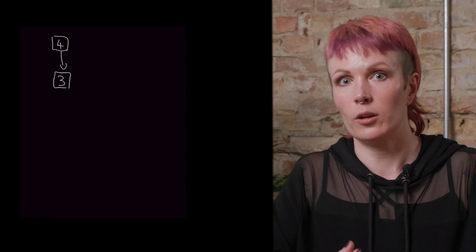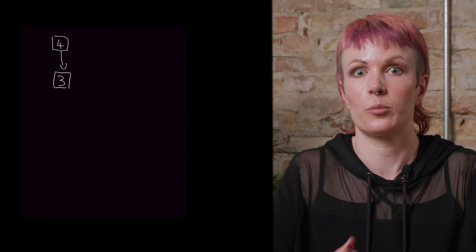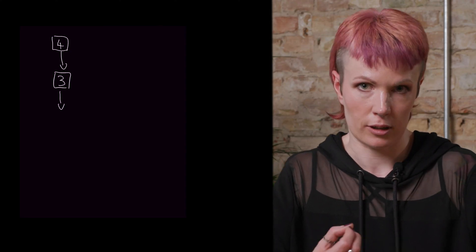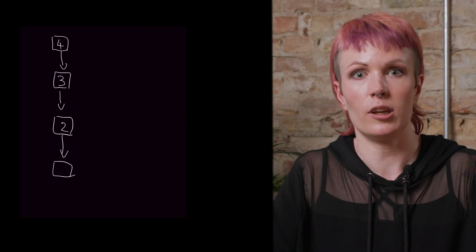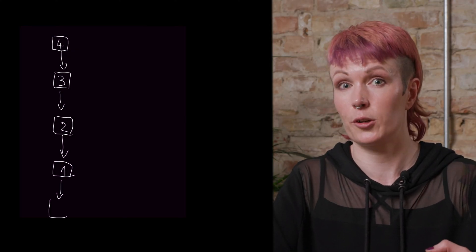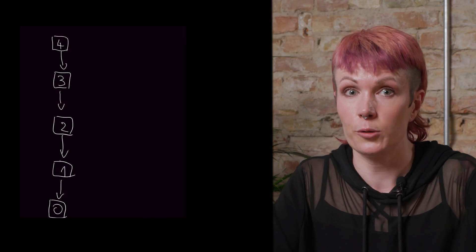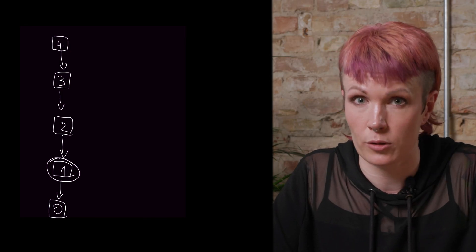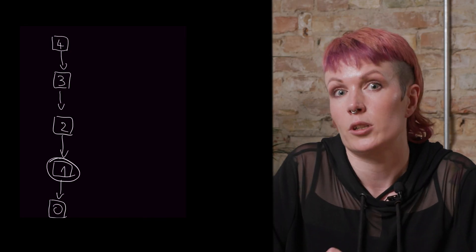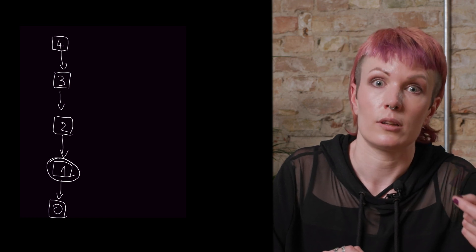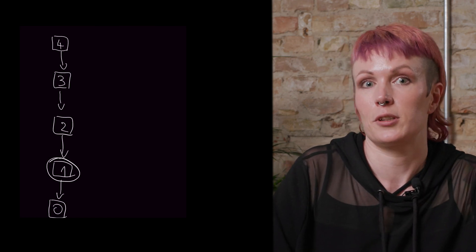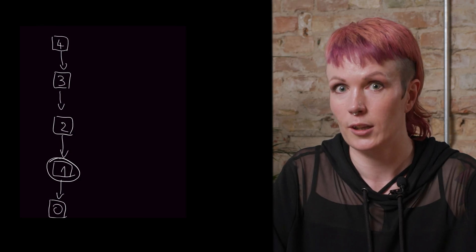First, we start with the number we want to find the factorial of. Then we take away 1 from that number and solve the smaller problem of finding the factorial of that reduced number. We keep doing this until we get to 0. Once we hit 0, we know the factorial is 1, so the bottom function in this chain returns 1. But since it called itself, it returns that value to itself in the previous function call.